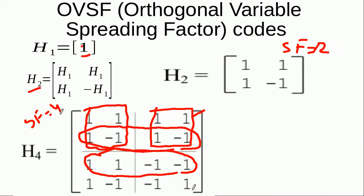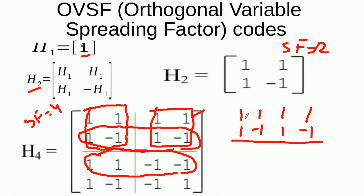What is meant by these codes being orthogonal? For example, I multiply two codes: 1, 1, 1, 1 and 1, −1, 1, −1. I multiply them element-wise: 1×1, 1×(−1), 1×1, 1×(−1). You see I have an equal number of ones and minus ones, so if I add all of them I get zero. This means that if I multiply and add any two codes in this matrix I get zero — they are orthogonal. Similarly, multiplying and adding any other pair of codes also gives zero.